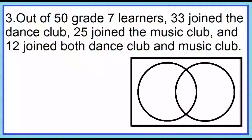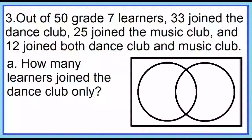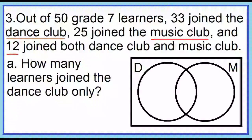Out of 50 grade 7 learners, 33 joined the dance club, 25 joined the music club, and 12 joined both dance club and music club. How many learners joined the dance club only? Let D be the set of dance club members, and let M be the set of music club members. Start with the intersection of the two sets — 12 joined both. Place 12 in the area where circles D and M overlap.